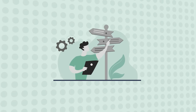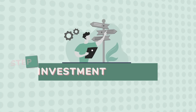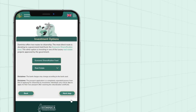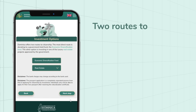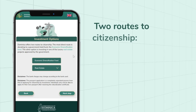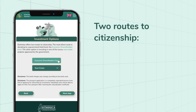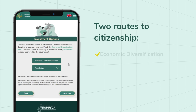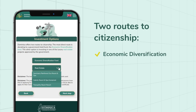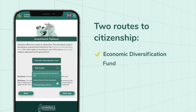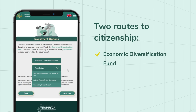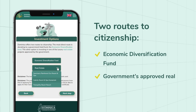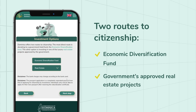Step 2: Select your investment option. Dominica offers two routes to citizenship. The most direct route is donating to the Economic Diversification Fund, and the second option is investing in one of the government's approved real estate projects.